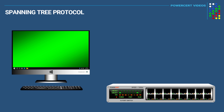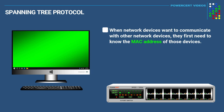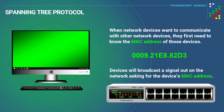Hello everyone. In this video we're going to be talking about the Spanning Tree Protocol. When network devices want to communicate with other network devices, they first need to know the MAC address of those devices. The way they find the MAC address of a device they want to talk to is by broadcasting a signal out on the network asking for that device's MAC address.